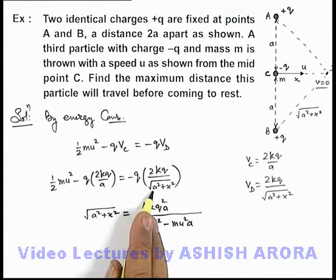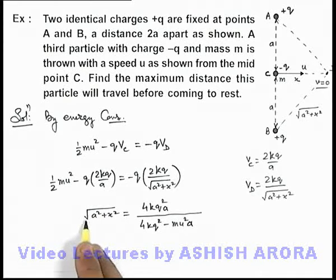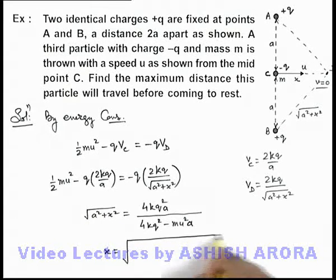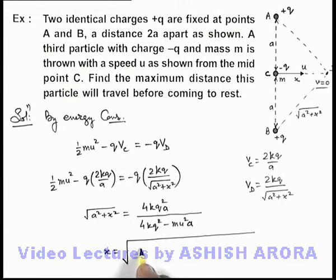We get √(a²+x²), and on simplifying this we get the value of x as, under the square root, this will be